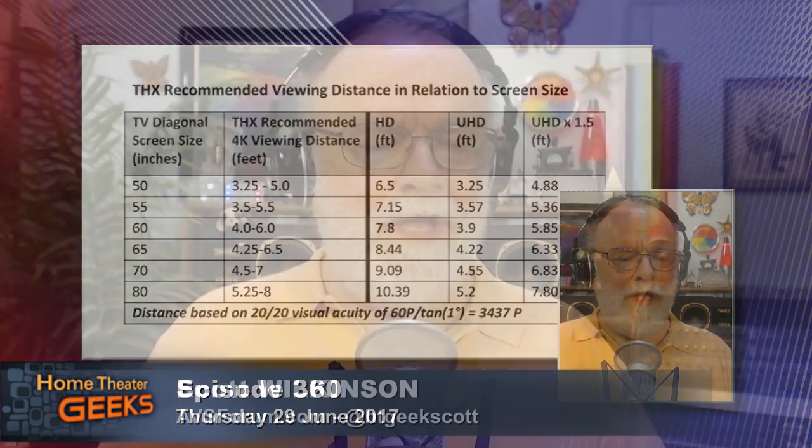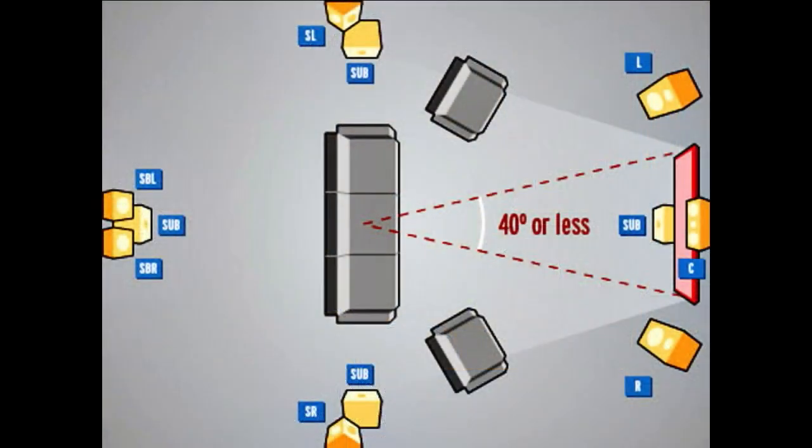There's another graphic called viewing angle, which expresses a similar thing in graphic form. This is a THX recommendation: from your couch, you want the viewing angle from side to side of the screen — for HD — to be 40 degrees or less. That's right, and it wouldn't be dramatically different for UHD.